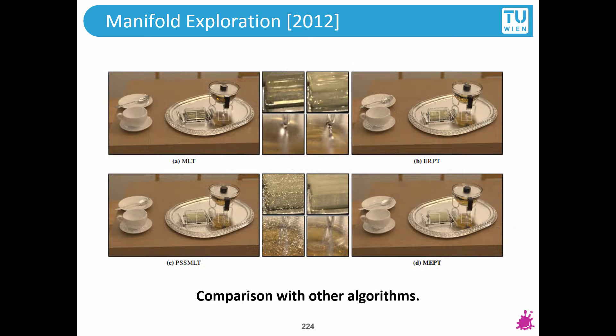How do the results look like? You can compare it to Metropolis light transport, which is either very noisy or it misses some of the light paths completely. In these very difficult test cases, the manifold exploration path tracer outperforms all of the existing algorithms.